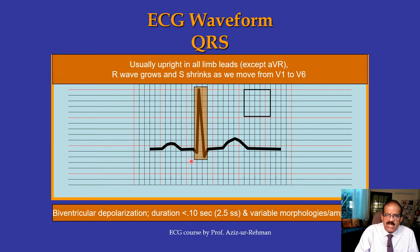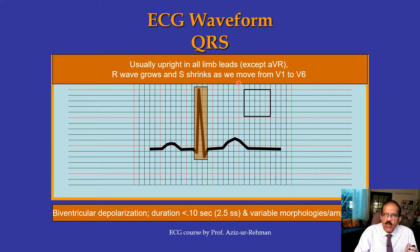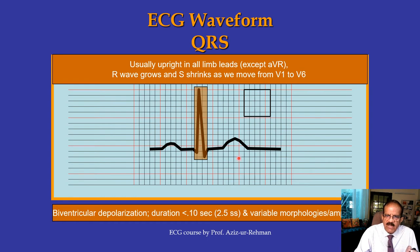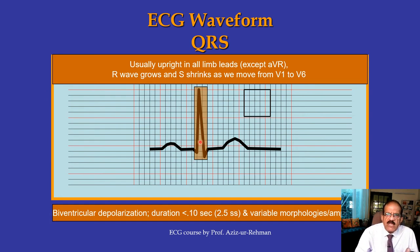QRS morphologies vary depending on which lead you are examining. They are usually upright in all three limb leads except aVR. In aVR the QRS is usually downward. The R wave grows and the S wave shrinks as we move from V1 to V6 — I will show this in a normal ECG at the end of this module. When analyzing the QRS complex we are concerned with its breadth, its amplitude, and various morphological abnormalities, which will be discussed in subsequent lectures.